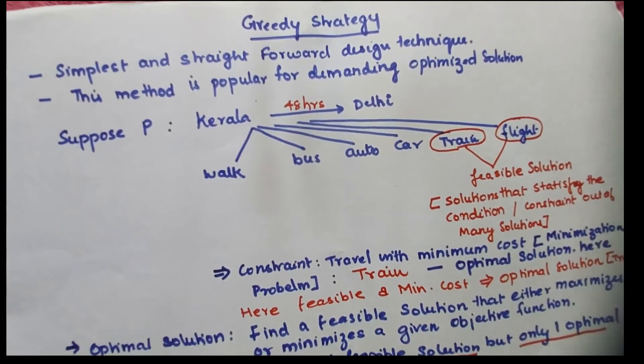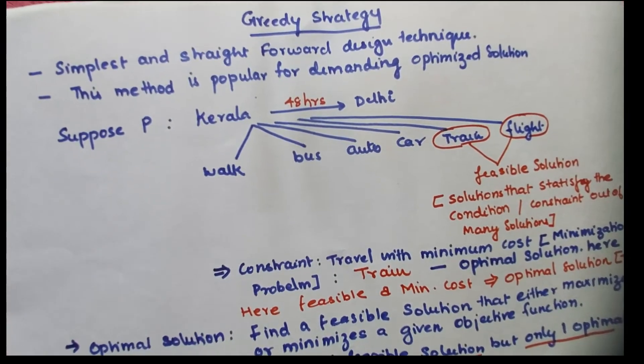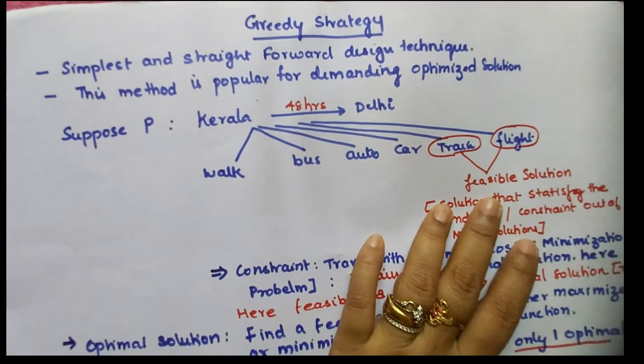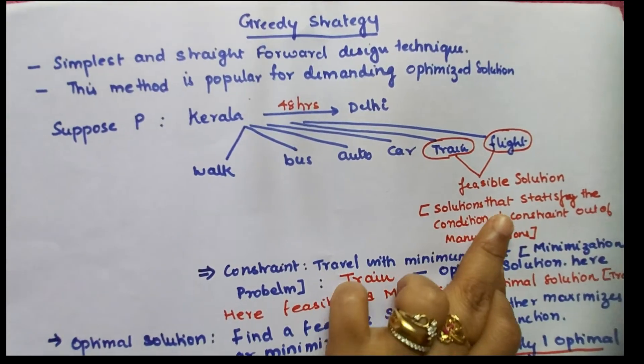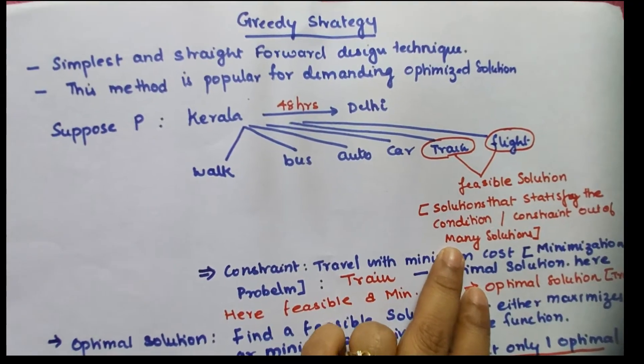We will find the feasible mode of transportation, which is train and flight. These two can be called feasible solutions - the solution that satisfies a certain condition or constraint out of many solutions.